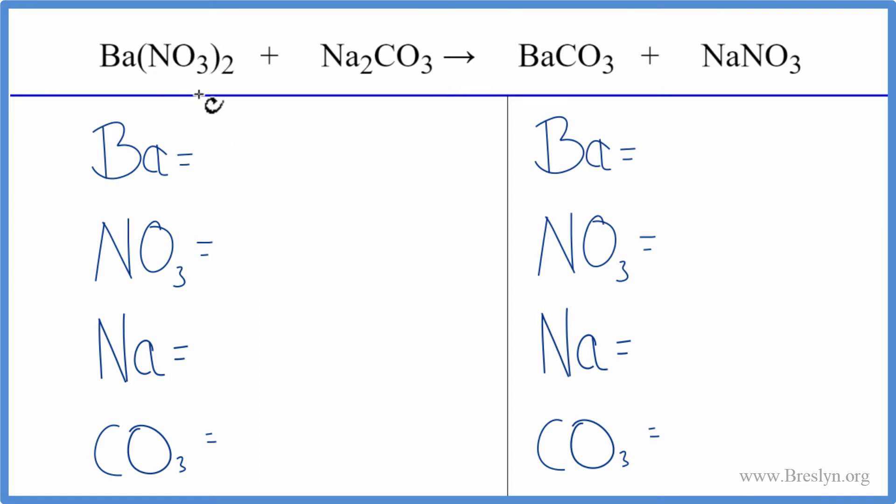We have this polyatomic ion called the nitrate ion. We have it here and here, so we're going to count the nitrate as one thing. The carbonate stays together in the chemical reaction, so we'll count it as one thing too. This makes it a lot easier to balance these double displacement reactions.